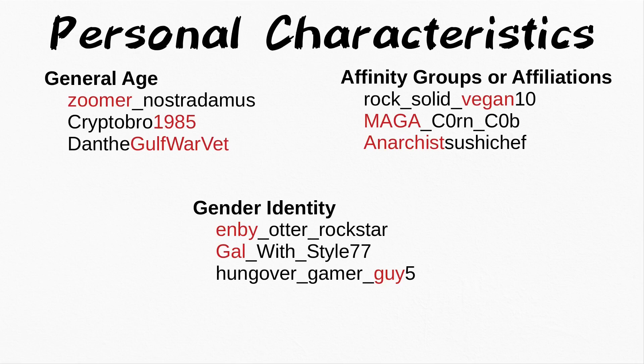For example, we can assume that if Dan was indeed active during the Gulf War, he would have to have been at least 18 years old by the war's conclusion. This gives us a floor limit for calculating his current age. Another thing you might see are references to lifestyle choices, affinity groups, or other affiliations.